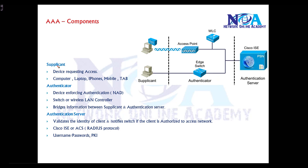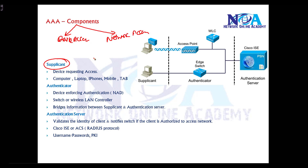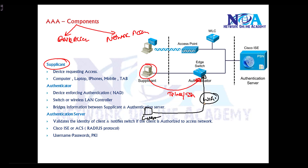The basic difference between these three is that the Supplicant is nothing but the end device used for accessing remote access. There are two different things we will do in network security: one is device access, and the other one is network access. If the user is using his own device to Telnet or SSH, that is device administration, or maybe a guest user or account user trying to connect to the switch or Wi-Fi network to gain access to the network.